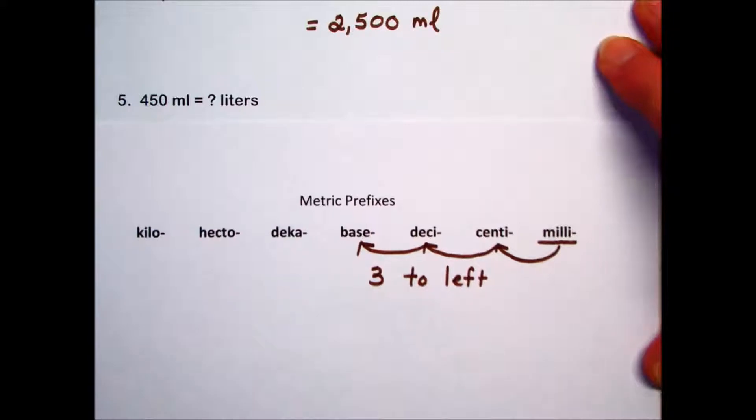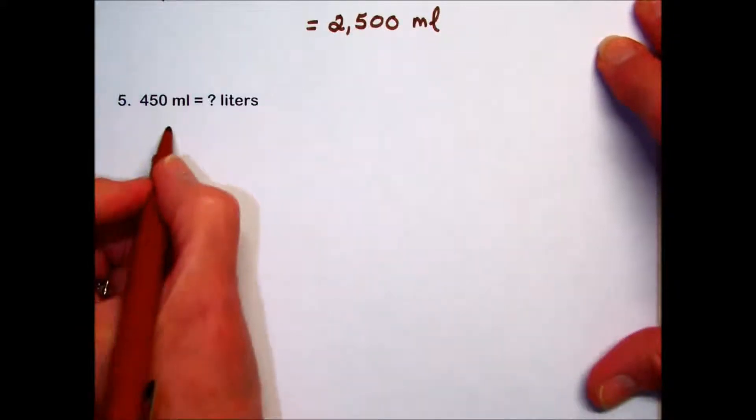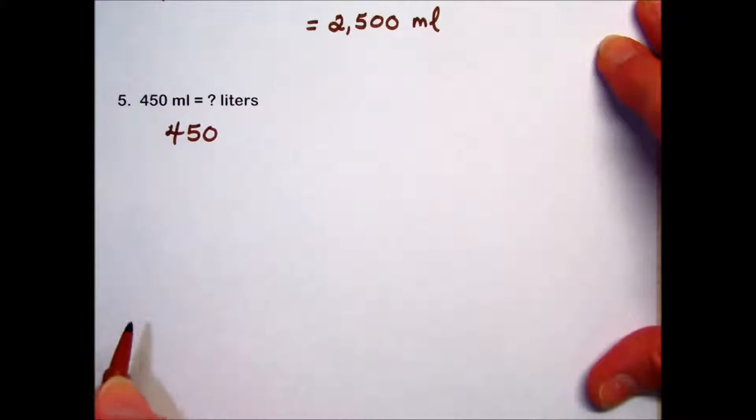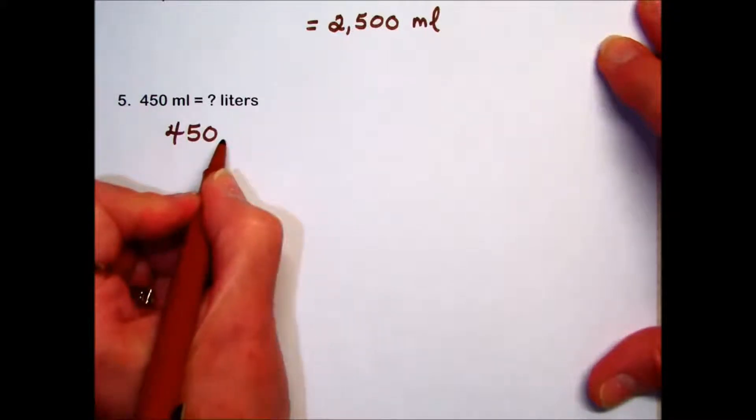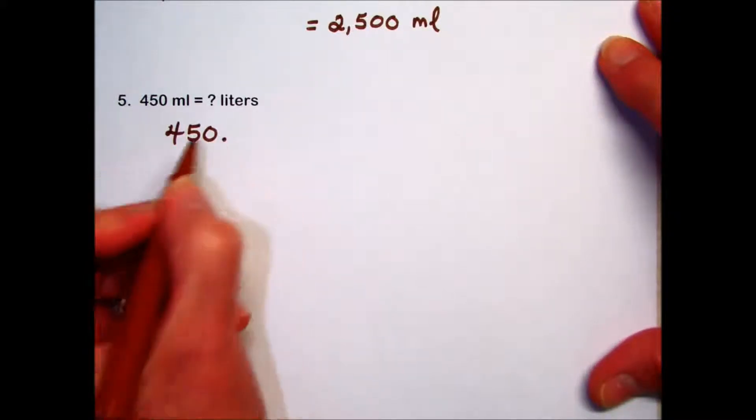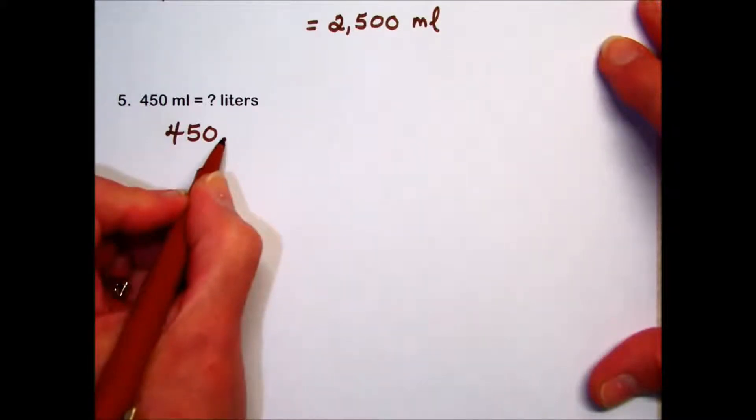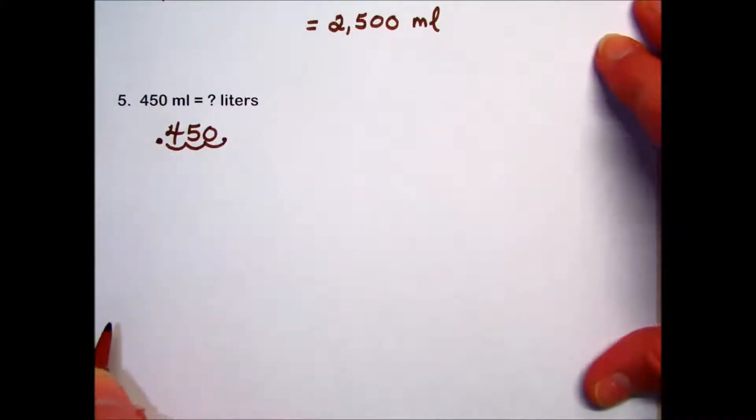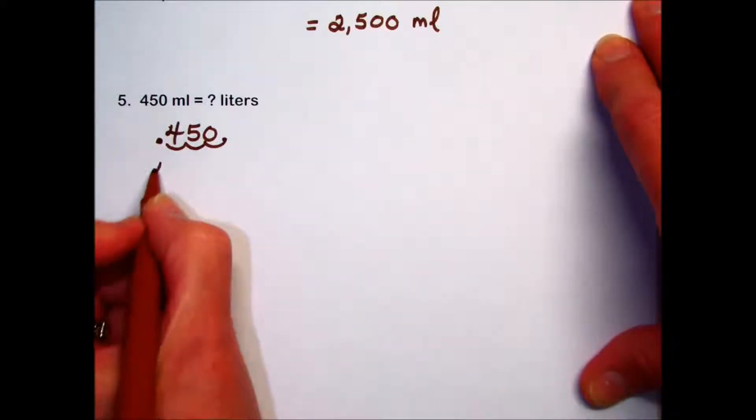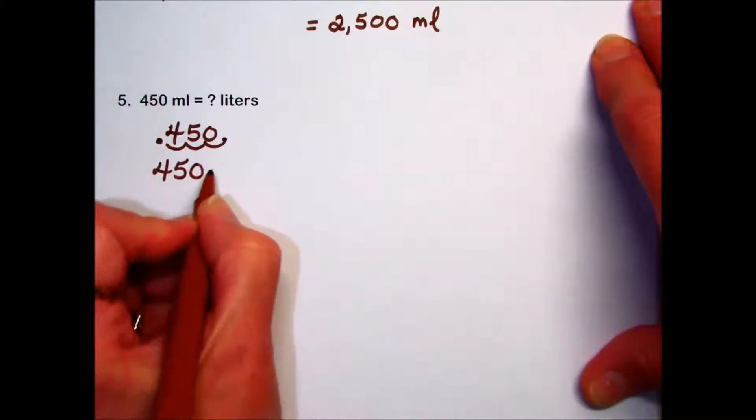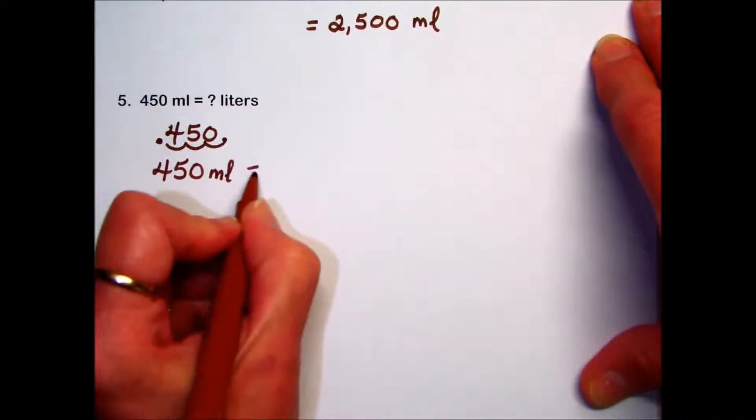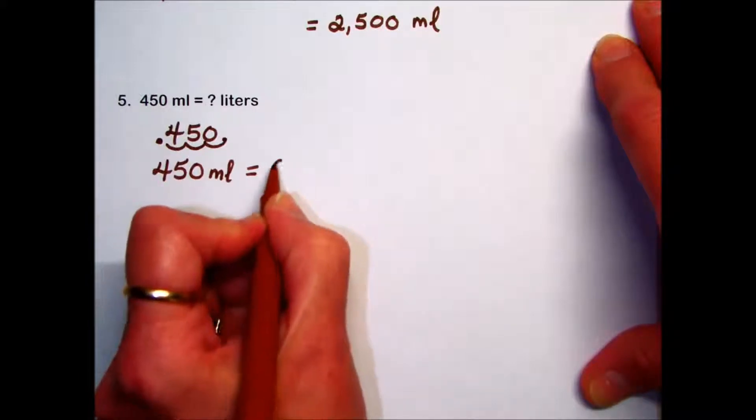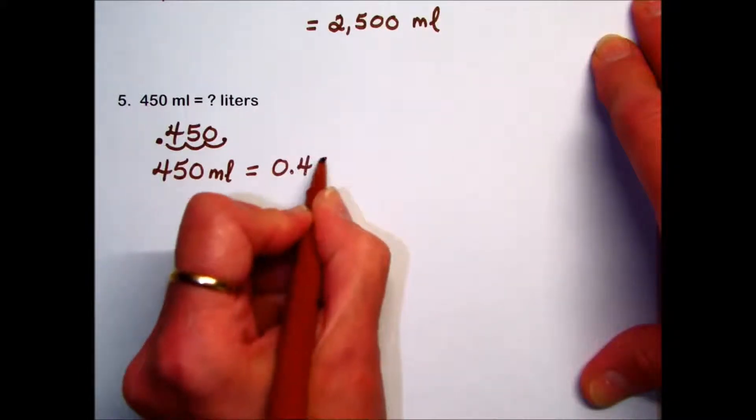We'll do that same movement on that given number. So we have 450 milliliters with the implied decimal place at the end, past the 0. Moving 3 decimal places to the left to convert from milliliters to liters puts our decimal place here in front of the 4. So 450 milliliters using the shortcut method is equivalent to 0.45 liters.